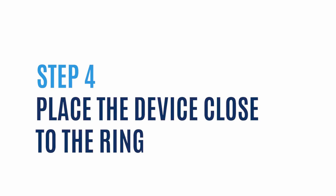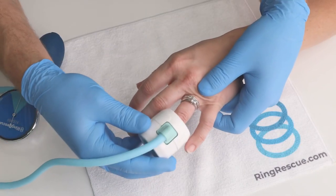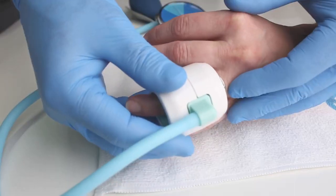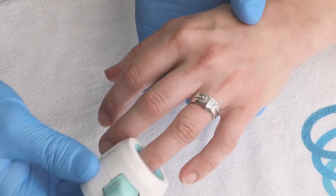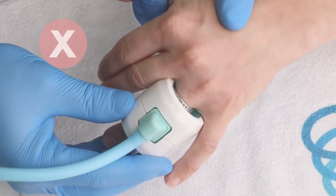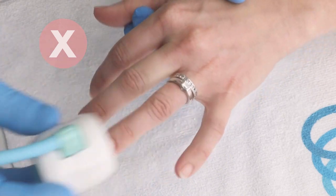Step 4: Place the device close to the ring. The device should be over the area of maximum swelling. Place as close to the ring as you can while ensuring the device is not over top of the ring. This can impact the effectiveness of the device and could puncture the internal bladder.